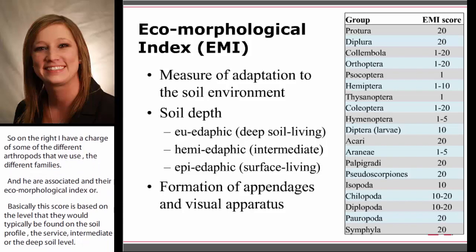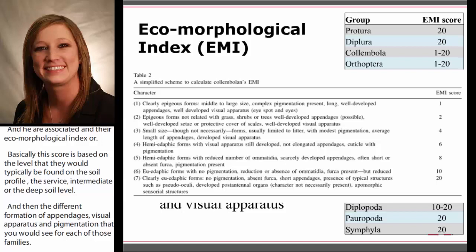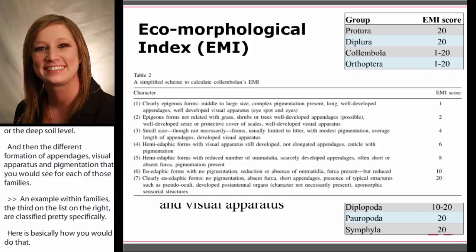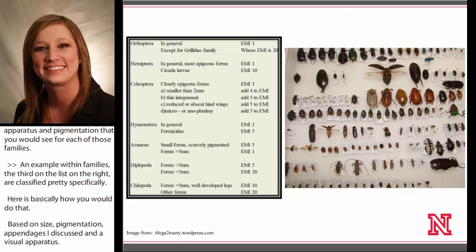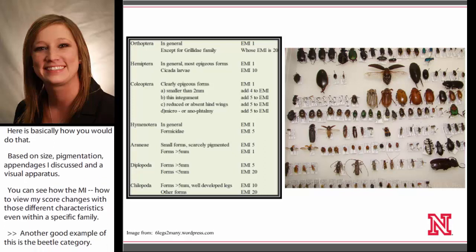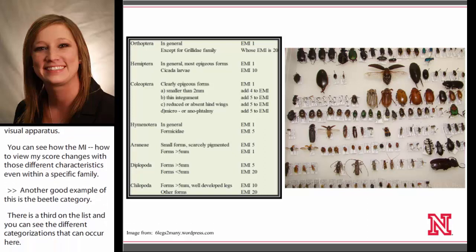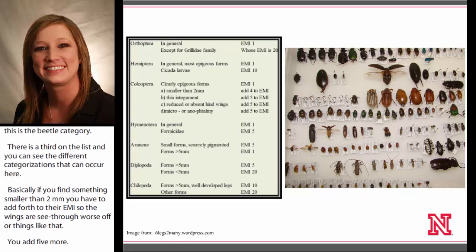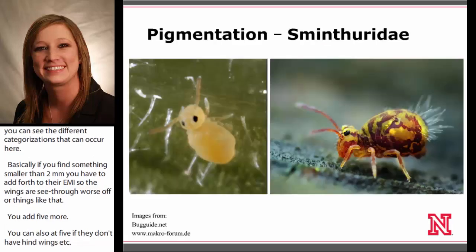As an example within families, Collembola — which is the third on that list on the right — are classified pretty specifically based on size, pigmentation, appendages, and visual apparatus, and you can see how the EMI score changes with each of those different characteristics even within a specific family. Another good example is Coleoptera, the beetle category. If you find something smaller than two millimeters, you add four to their EMI. If the wings are see-through or soft, you add five more. You can also add five if they don't have hind wings. So beetles can range anywhere from one to twenty EMI, all specific to their individual characteristics.